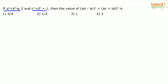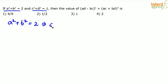Unlike the previous question, here you cannot take random values. You have to be very careful — substitute values such that a squared plus b squared equals 2 and c squared plus d squared equals 1. Once those conditions are satisfied, substitute those a, b, c, d values into the expression. For a squared plus b squared equals 2, we can take a equals 1 and b equals 1, since 1 plus 1 equals 2.